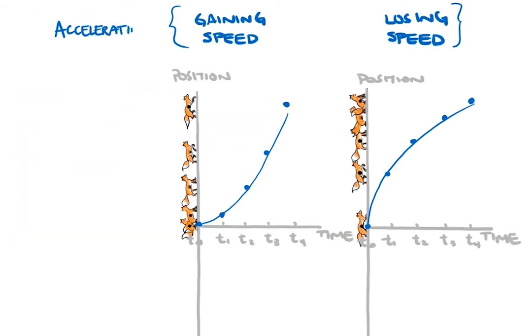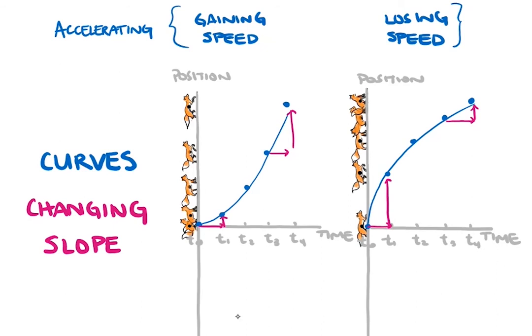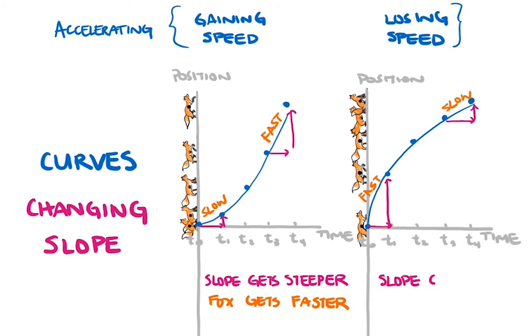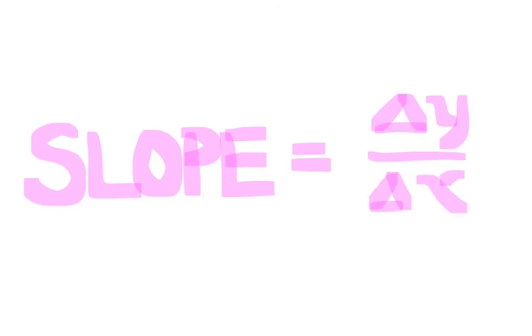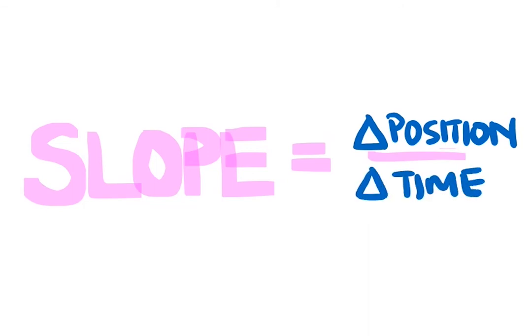That's different from the accelerating fox's graph. A curve, by definition, has changing slope. Looking at the graph of the fox gaining speed, notice how the slope gets steeper as time goes on and the fox gets faster. And looking at the graph of the fox losing speed, notice how the slope gets flatter as time goes on as the fox gets slower. The magnitude or size of slope of this position-time graph therefore tells us the velocity of the fox. The slope is defined as the change in y divided by the change in x — a greater change in y for the same change in x leads to a greater slope. When the fox is gaining speed, the y values represent position and the x values represent time, so a greater change in position for the same interval of time means a faster object.